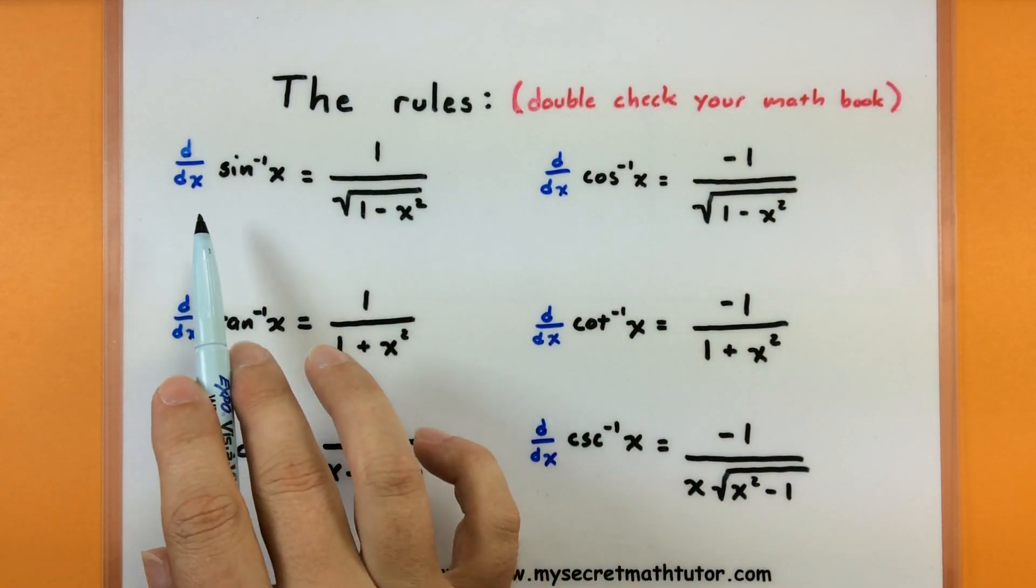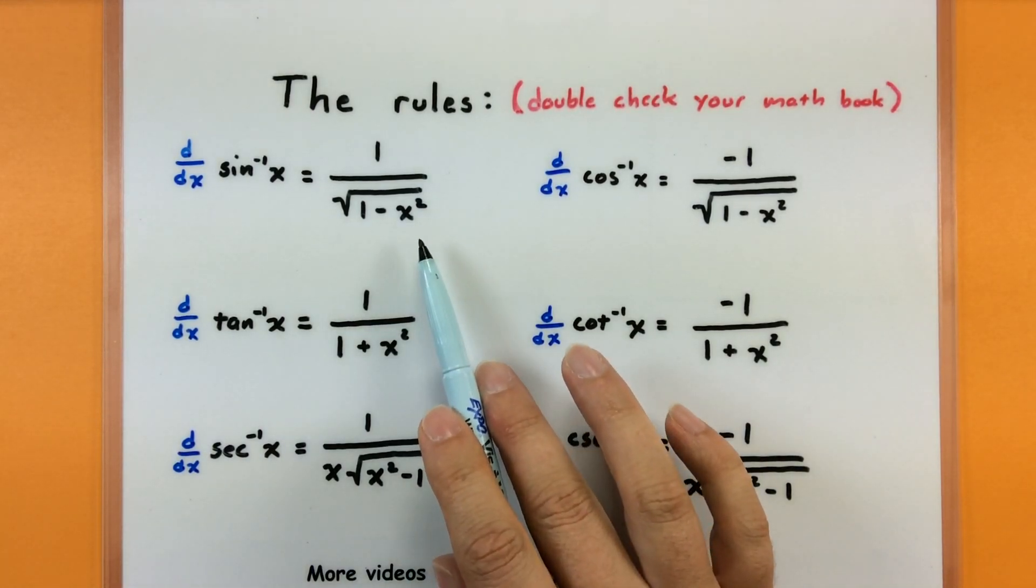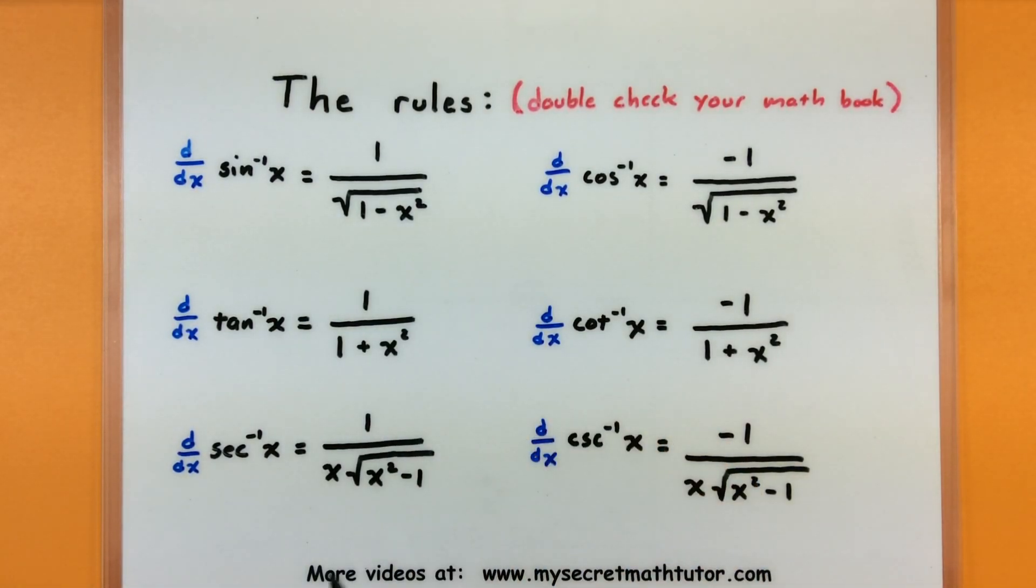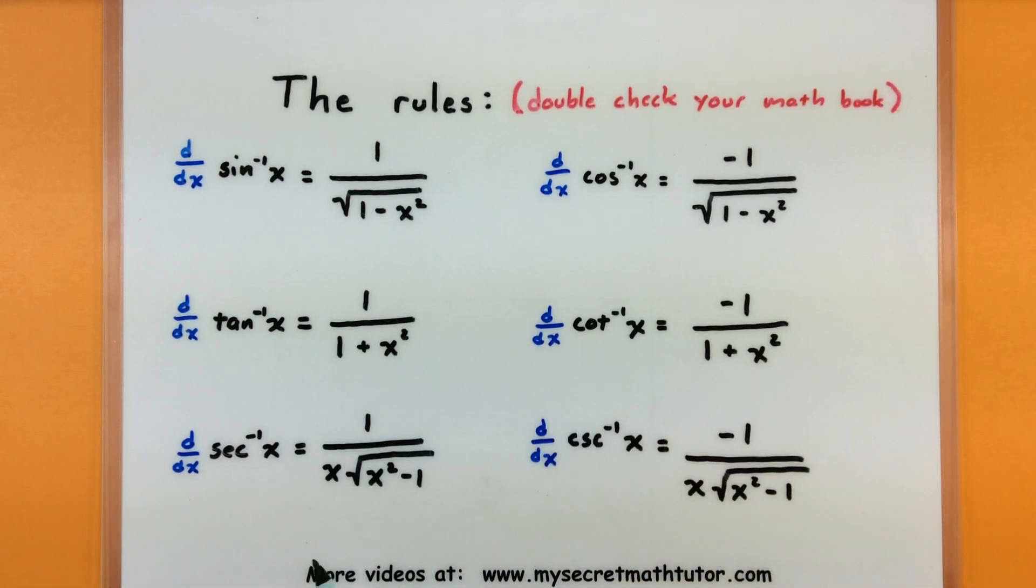Alright, so let's just quickly cover these. If I take the derivative of inverse sine, this is 1 divided by the square root of 1 minus x squared. If I take the derivative of inverse tangent, then I have 1 divided by 1 plus x squared. And if I have the derivative of inverse secant, then I have 1 divided by x multiplied by the square root of x squared minus 1.